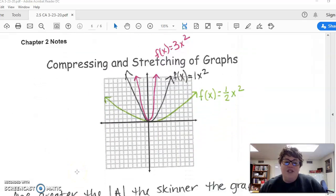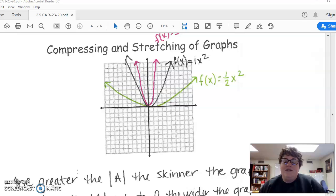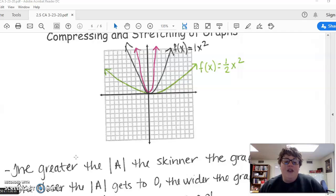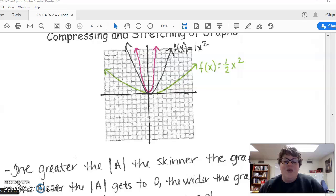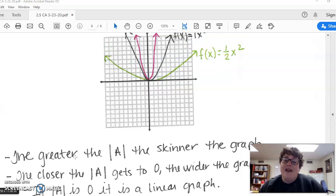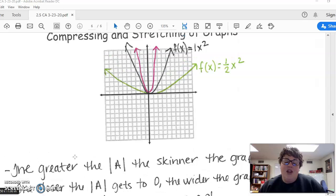The last thing is stretching and compressing of the graph. We talked about this with quadratics before spring break. The greater the absolute value of A—the negative doesn't matter—the skinnier the graph. The closer A gets to zero, the wider the graph, because once A hits zero, it becomes a straight line.